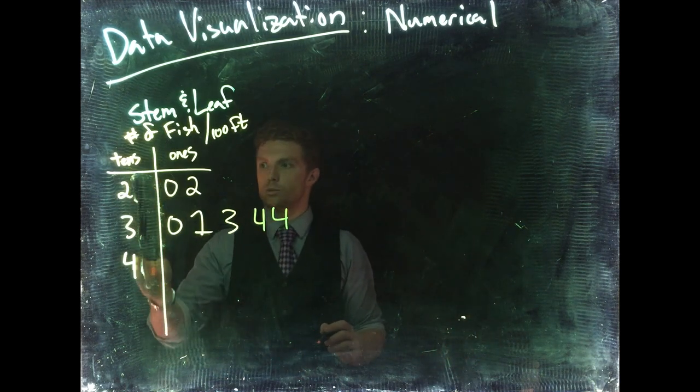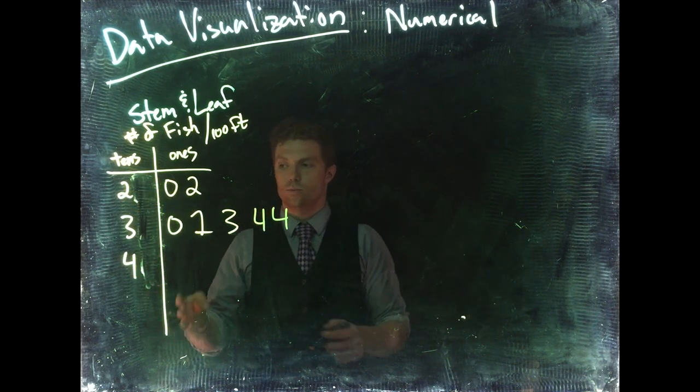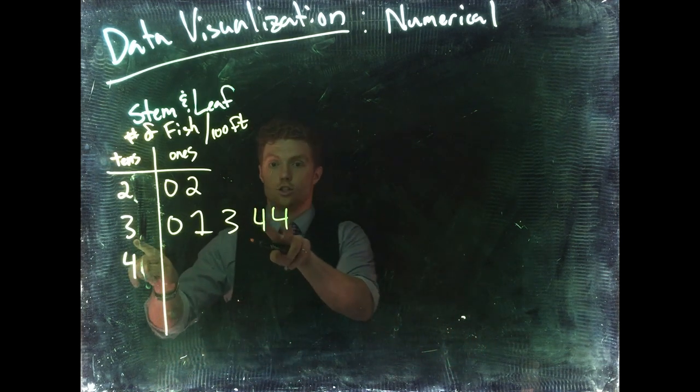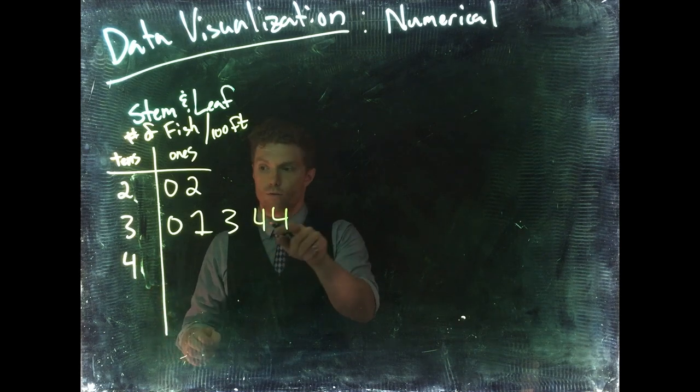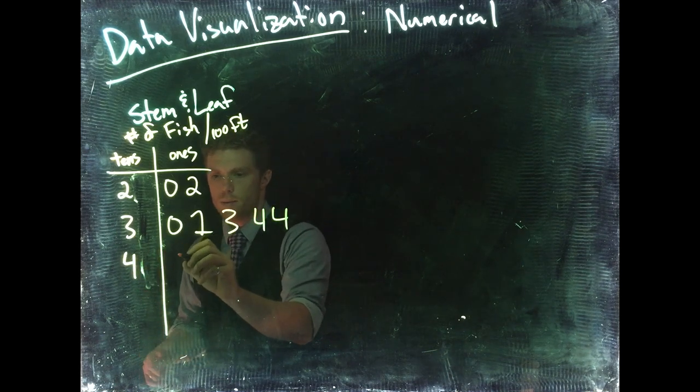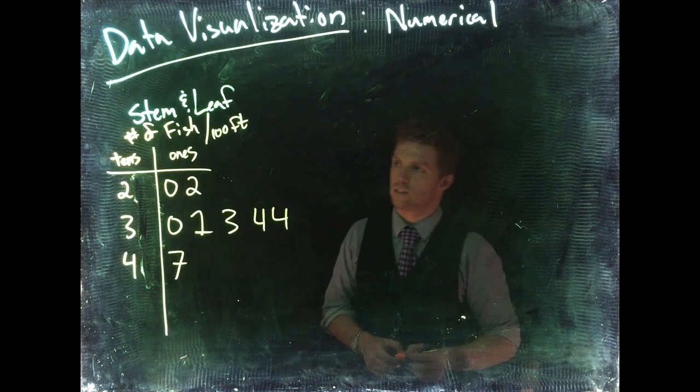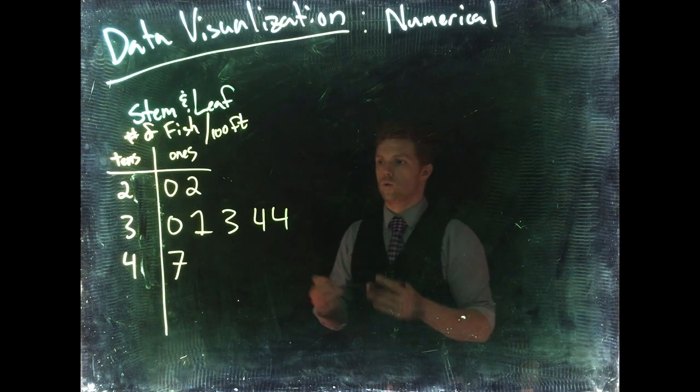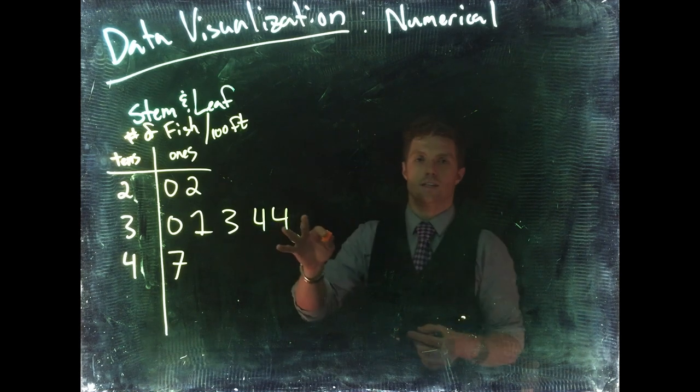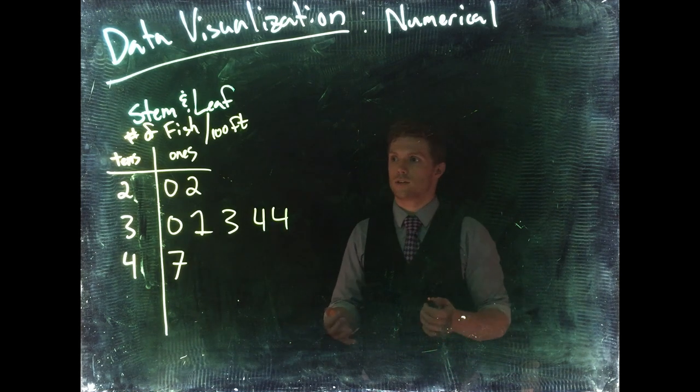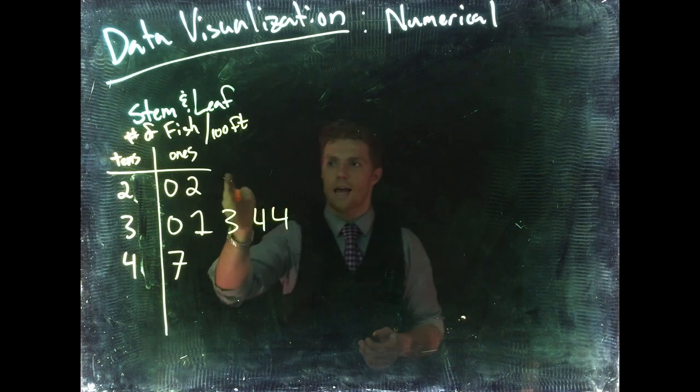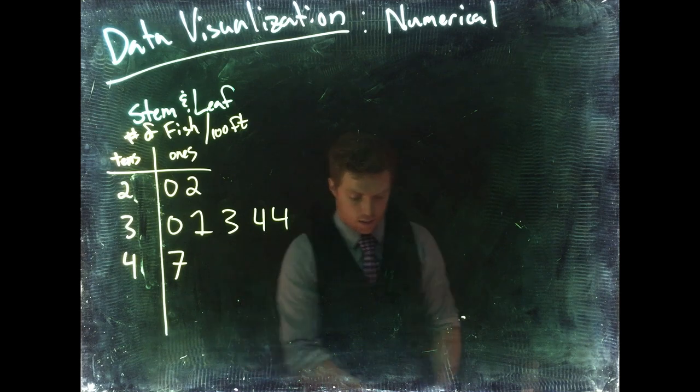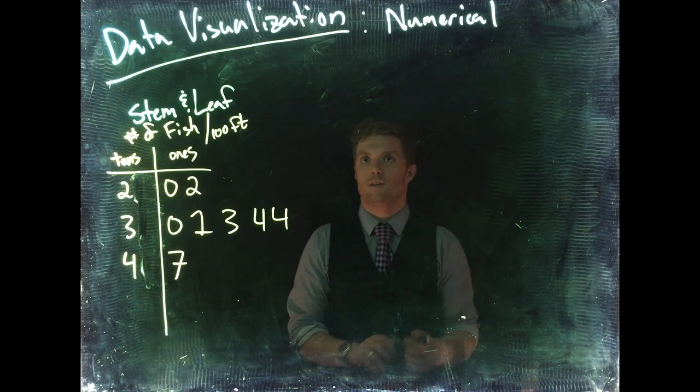This is our tens place, the 20. We can ask questions like how many times did we see 34 fish? We saw that two times—30 and 4, and 4—twice. Maybe one stretch had a ton of fish, 47. We get a nice distribution and can quickly visualize what's going on. The problem is that as you get a lot of data, it gets really cumbersome to put the exact number for every single observation.